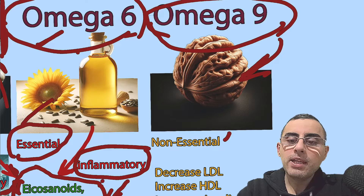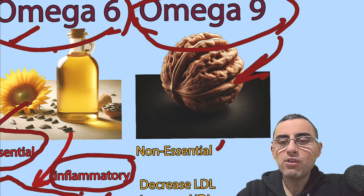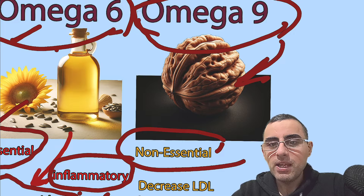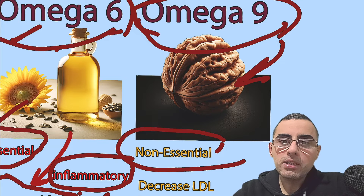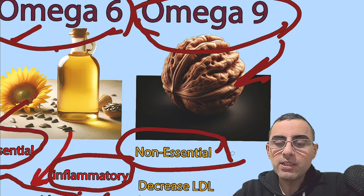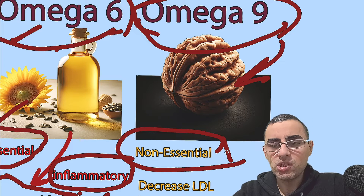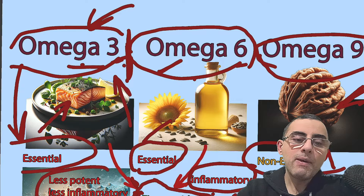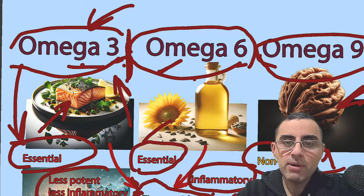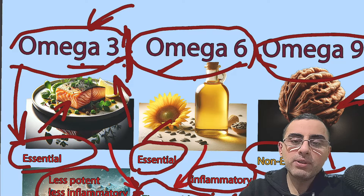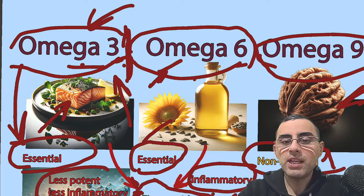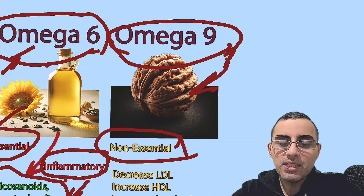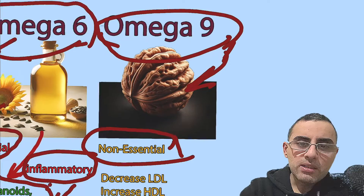Now about omega-9: nuts and seeds — including flaxseed and chia seeds — contain high amounts of omega-9. Omega-9 is not essential, meaning our body can produce it. Because it's non-essential, there is no need to worry too much about it. You should focus on omega-3 because omega-3 is essential, we cannot synthesize it, and the balance between omega-3 and omega-6 is very important.